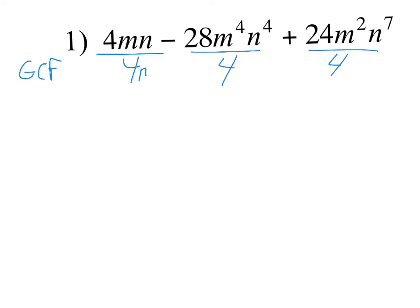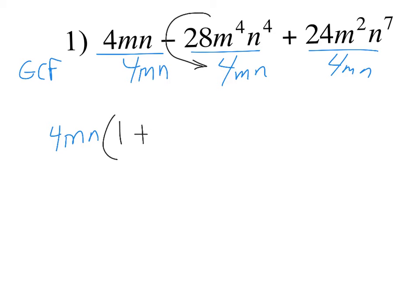After we factor out that 4mn, what will be left in the first term? Just one. Good job — thank you for not saying 'nothing' because a lot of people have been saying that. The next term will have 7n to the third power, and the last term will have 6m and n to the sixth power.